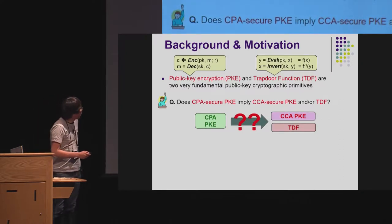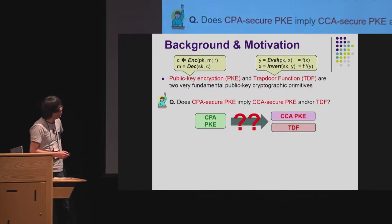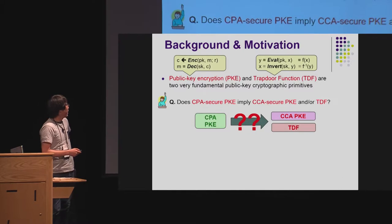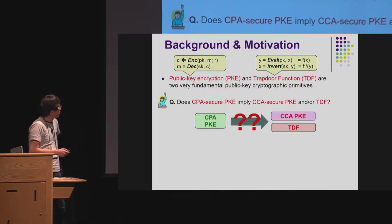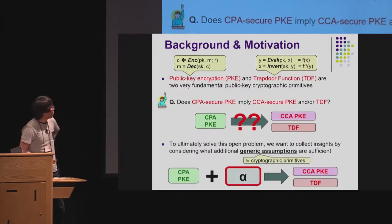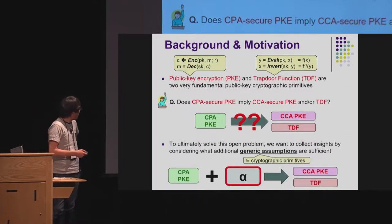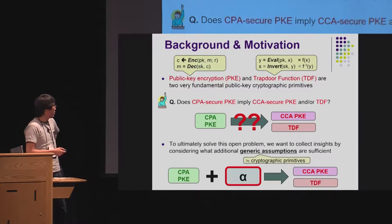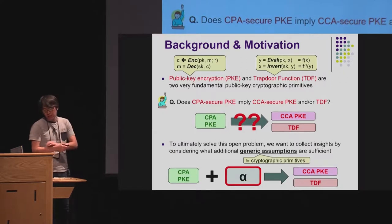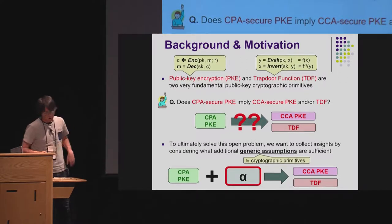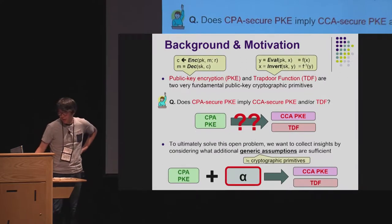The main motivating question in our work is: does CPA-secure PKE imply CCA-secure PKE and/or trapdoor functions? This is a very important open problem, and to ultimately solve it, we want to gain insight by considering what additional generic assumptions are sufficient for achieving these two primitives.